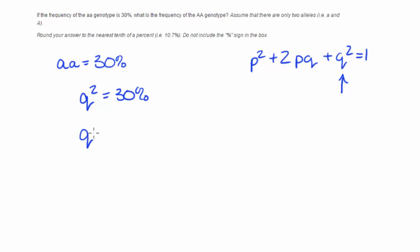So I'm going to take the square root of that. I'm going to punch it in as 0.3. So the square root of 0.3 is going to be 0.5477. So that's part of it. We know what Q is.